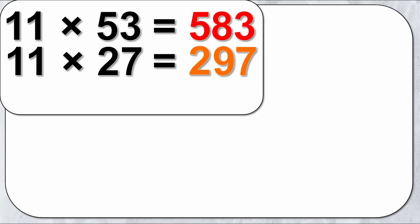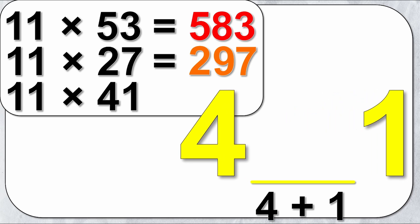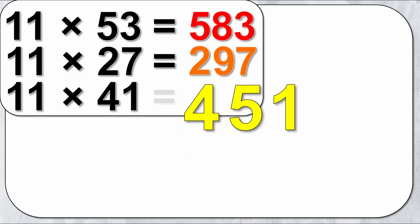Let's do another one just to really illustrate it. 11 times 41. Well I write 41, pull the numbers apart, and the middle number is the sum of 4 plus 1 which is 5. And so 11 times 41 is just 451.